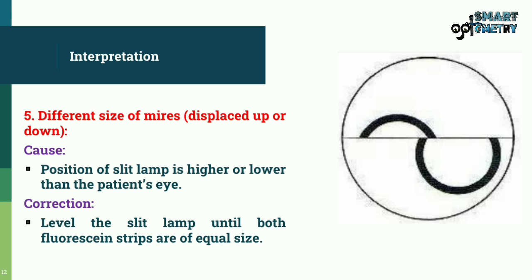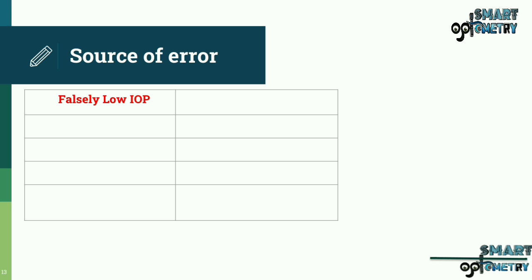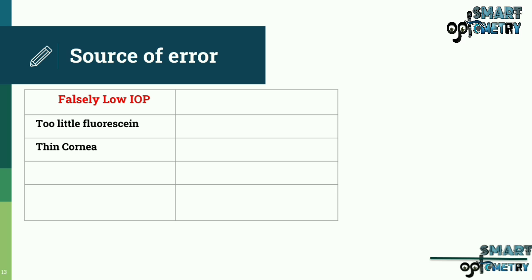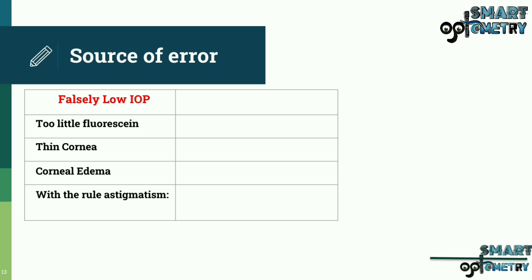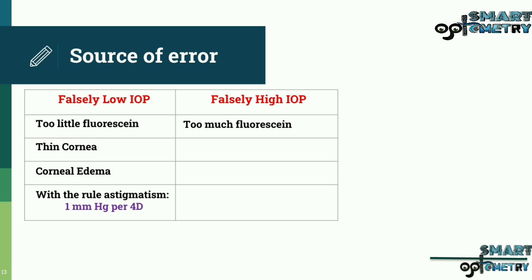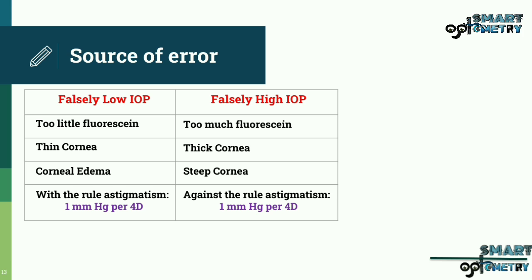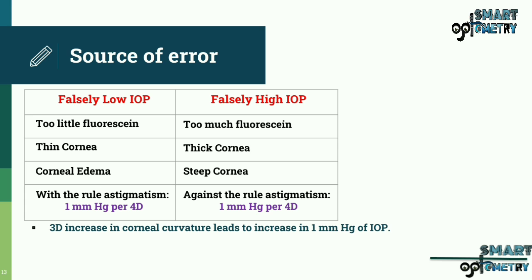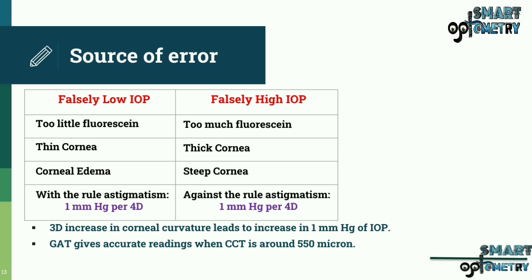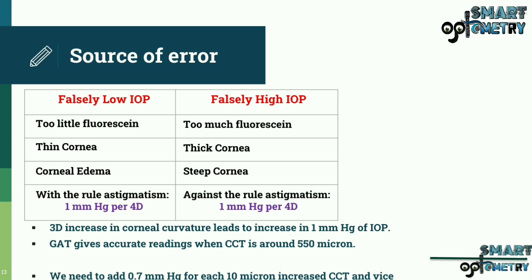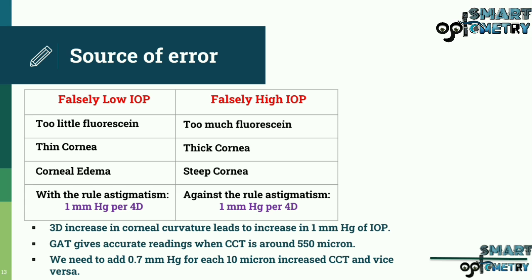Sources of error: falsely low IOP occurs when fluorescein is too little, with thin cornea, corneal edema, or 4 diopters of with-the-rule astigmatism, which leads to a decrease of 1 mmHg. A 3 diopter increase in corneal curvature leads to an increase of 1 mmHg in IOP. GAT gives accurate readings when central corneal thickness is around 550 microns; add 0.7 mmHg for each 10 microns of increased central corneal thickness, and vice versa.